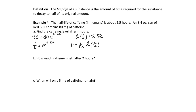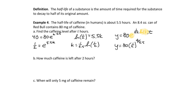Putting this in and simplifying: y equals 80 e to the (1/5.5) ln(1/2) times t. Taking advantage of e to the ln(1/2) equaling one-half, the final formula is y equals 80 times (1/2) to the t divided by 5.5. The t/5.5 tells us how many half-lives we've experienced — every time we reach a half-life, we multiply by one-half, building up factors of one-half.